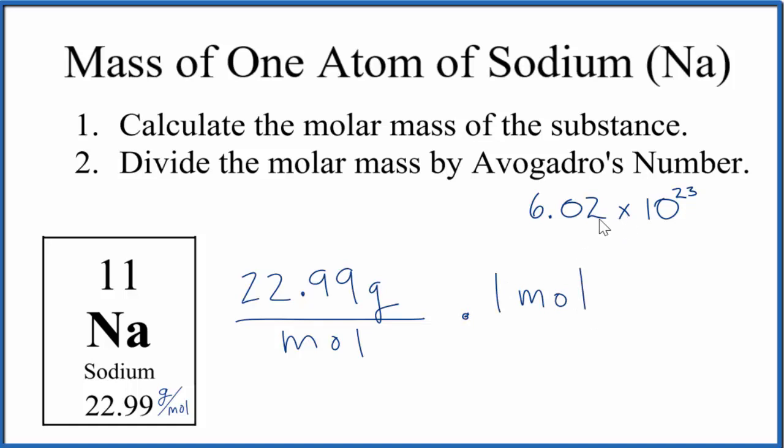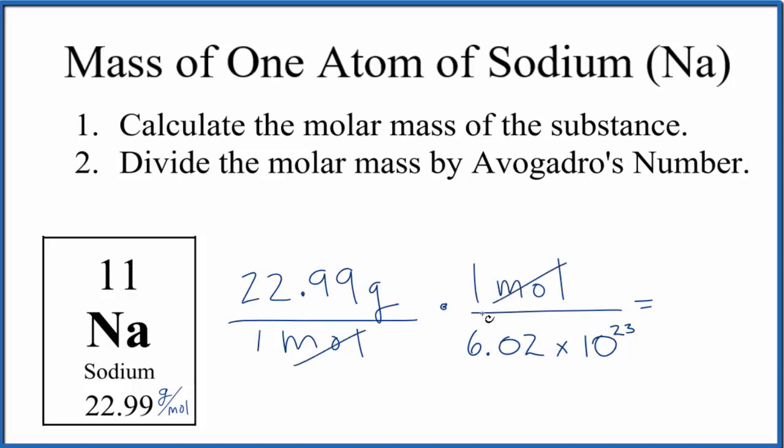Now when we multiply and then divide, moles on the top and bottom cancel out. So we're essentially dividing 22.99 grams by Avogadro's number here.